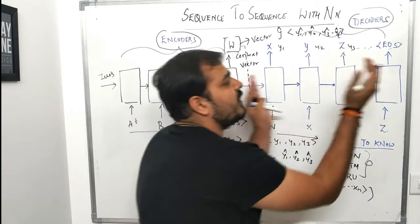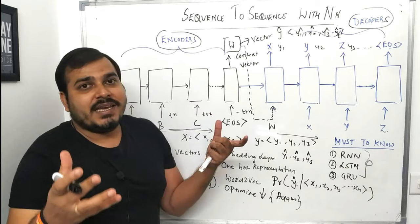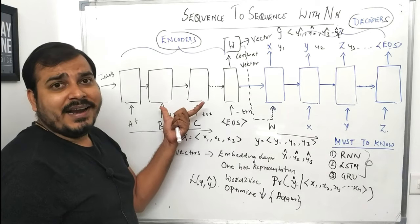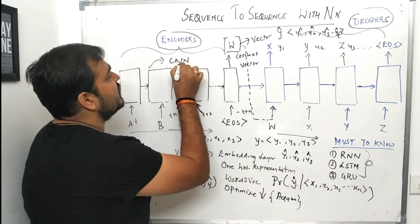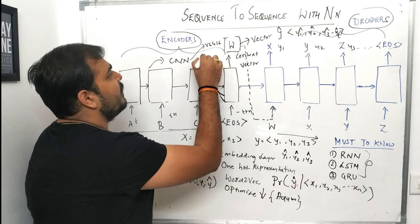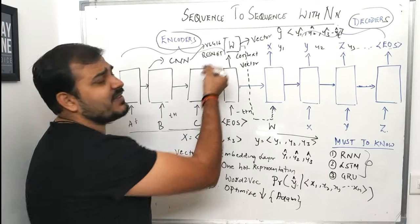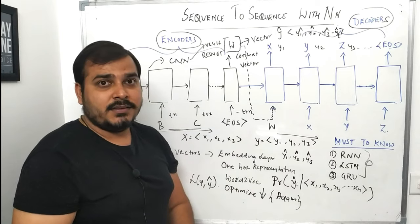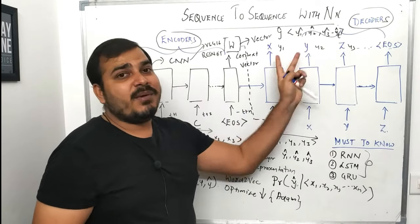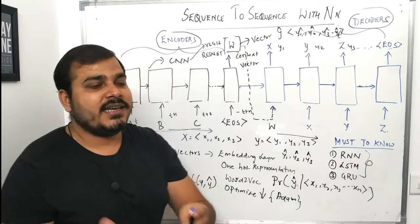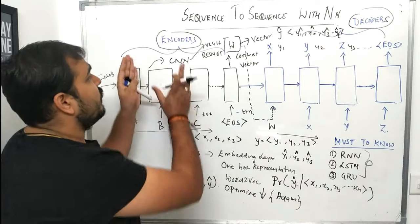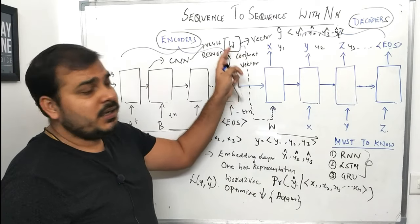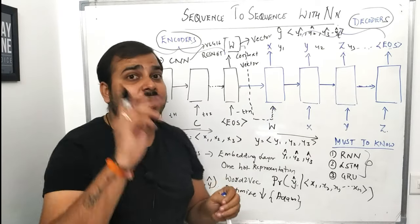Now let's take another application: image captioning. In image captioning, we give an image, and instead of an LSTM encoder we use an advanced CNN — it may be VGG16, ResNet, or any transfer learning model you want to use. Once we use this, I pick up all the vectors from the last flattened layer and pass them to my decoder. Since the decoder has sequences of text, if I have a training dataset with images and their captions, I use a CNN for the image, take the last flattened layer as the context vector, and pass it to the decoder — back propagation proceeds accordingly.